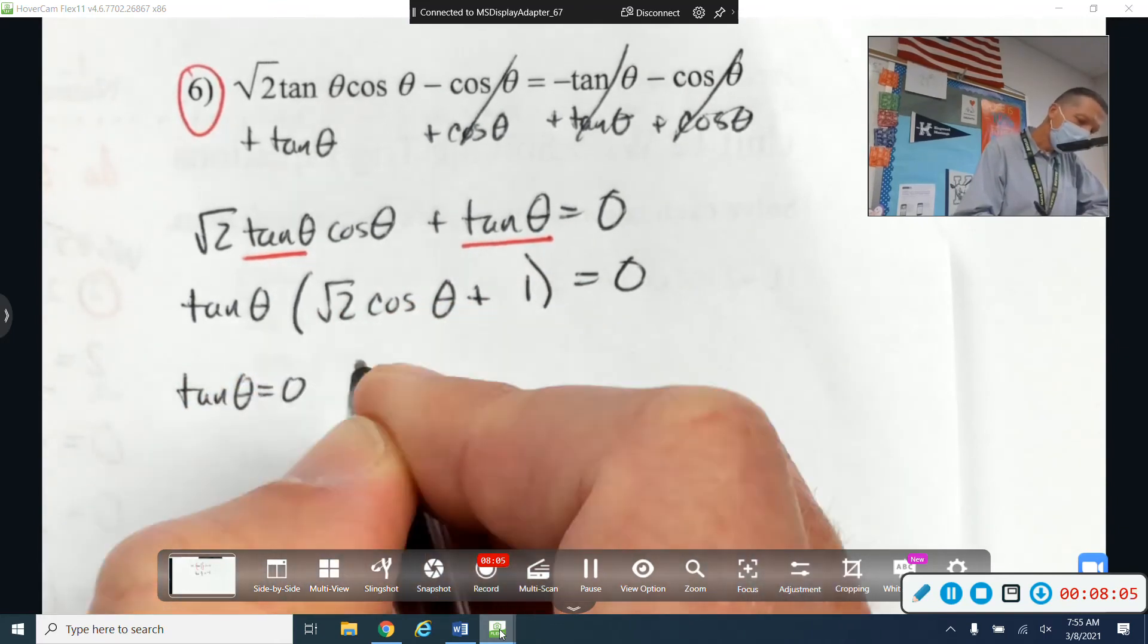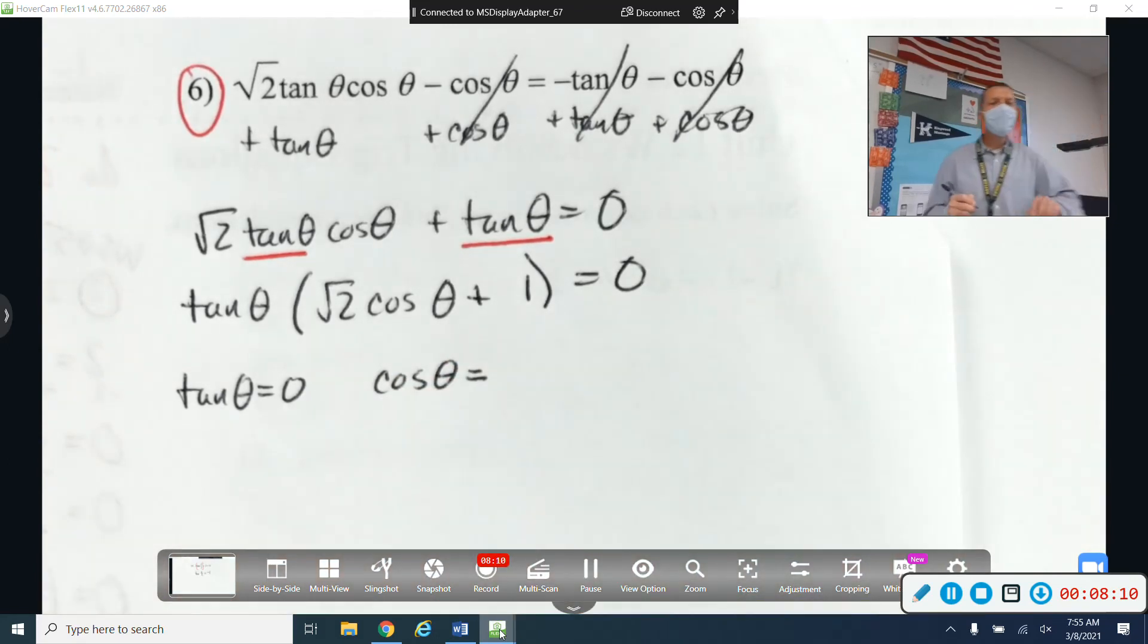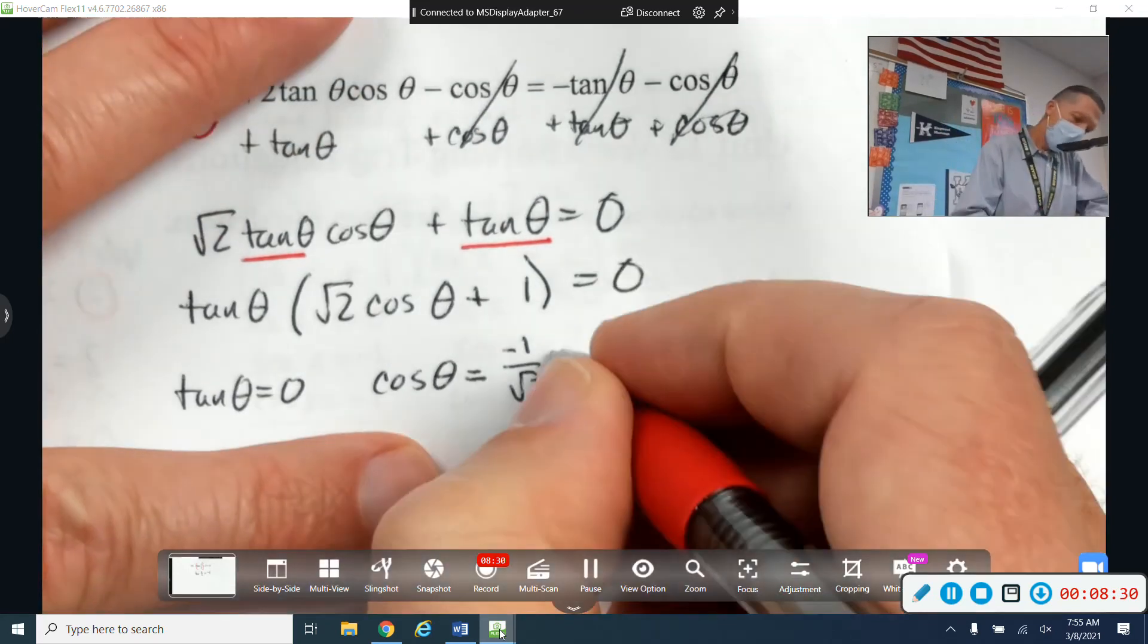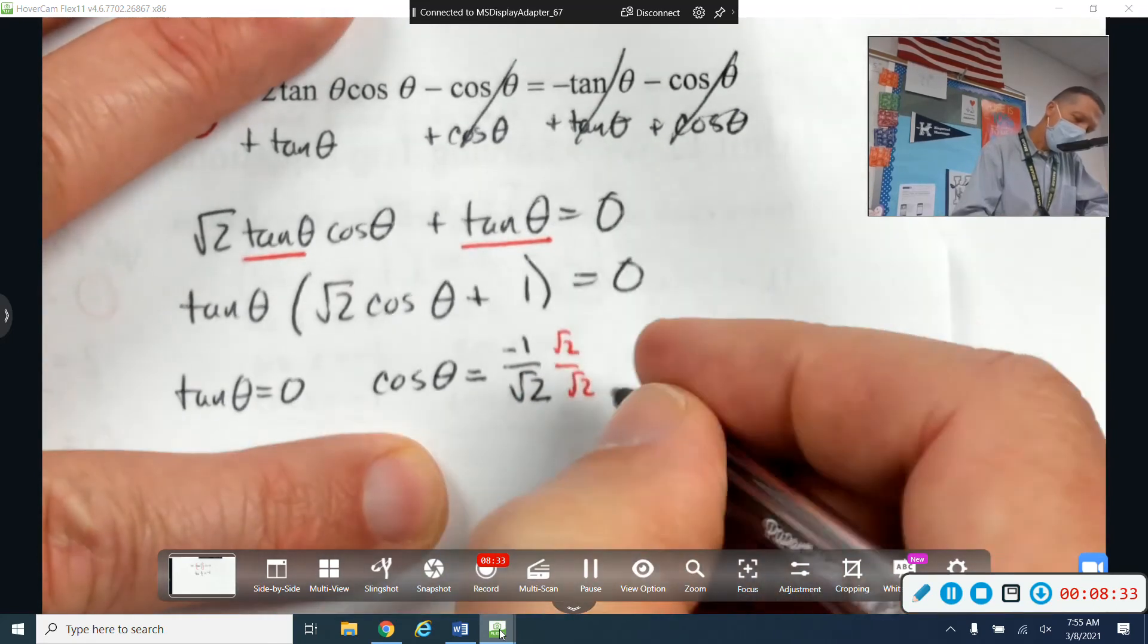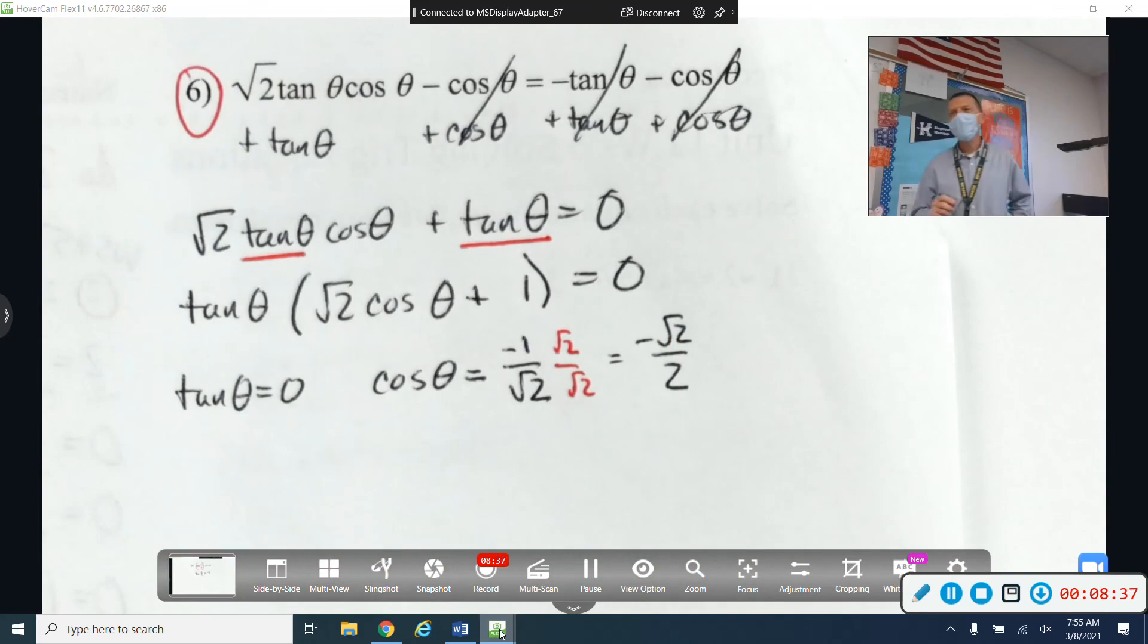So I'm going to set both equal to zero. Tangent theta equals zero. I'm going to skip a step or two here. If I set the second piece equal to zero, subtract the one and divide by square root of 2. Which doesn't look exactly like unit circle stuff. But if I fix that, I get negative root 2 over 2. And that looks like a unit circle answer.